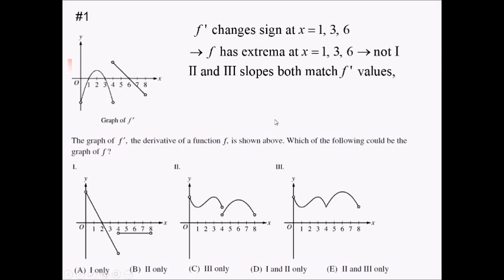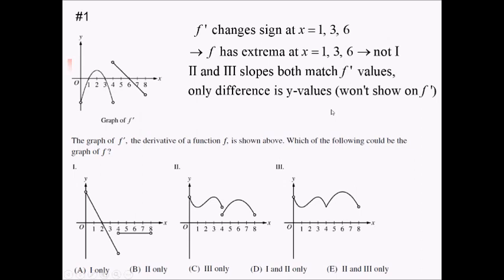These different y values are really the only difference. Unfortunately, the f prime graph is not going to tell you anything about the y values, only about the slopes. So for that reason, 2 and 3 are both going to be possible graphs for this f prime. So the answer is choice E.